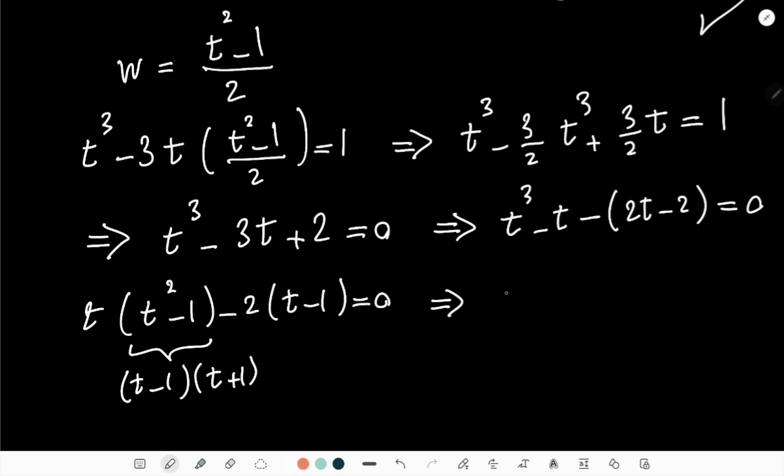And we get (t - 1)(t² + t - 2) = 0. But pay attention, this can be further factorized, and this can be written as (t + 2)(t - 1).